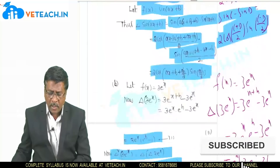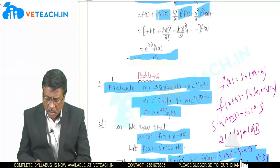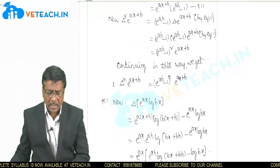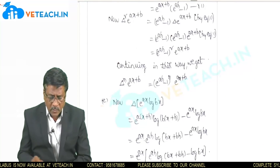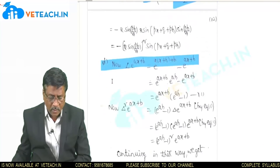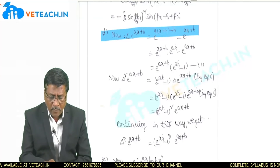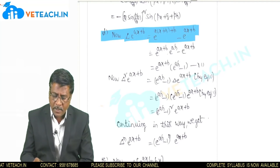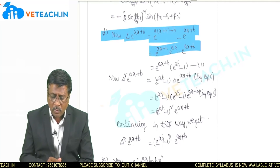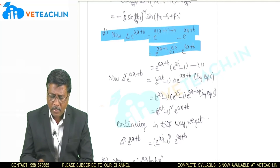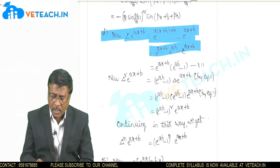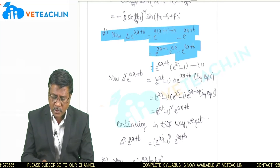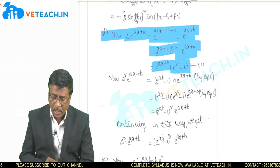The fourth problem is delta to the power n of e^(ax+b), the nth forward difference. For the first forward difference: delta of e^(ax+b) = e^(a(x+h)+b) − e^(ax+b) = e^(ax+b)·eᵃʰ − e^(ax+b). Taking e^(ax+b) as common: e^(ax+b)·(eᵃʰ − 1).